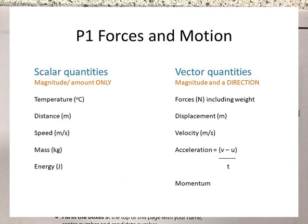First thing we need to understand is the difference between scalar and vector quantities. We're going to measure loads of different things in physics — the temperature of an object, the speed of something, the mass or the weight of something. All of these can be put into two different categories. Things that have just got amounts, which we call magnitudes — things that have just got numbers, like temperature — you could have 10 degrees or 60 degrees C. That would be a scalar quantity.